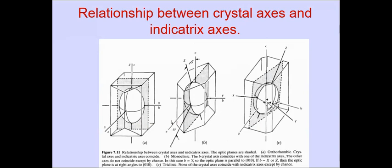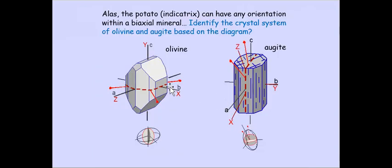In the triclinic system, none of the indicatrix vibration directions are parallel to the crystallographic axes. Using examples: olivine, where a is parallel to z, b is parallel to x, and c is parallel to y, belongs to orthorhombic system — confirmed because all three vibration directions align with the crystallographic axes.